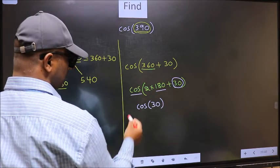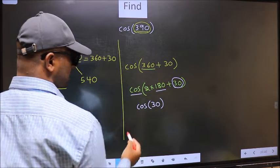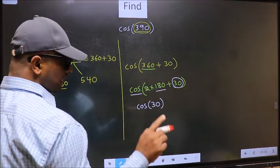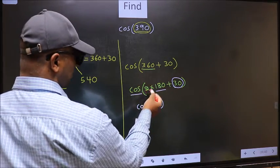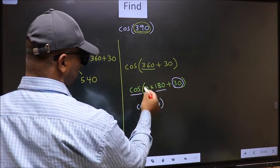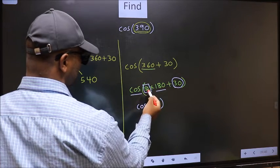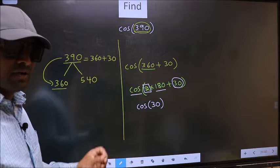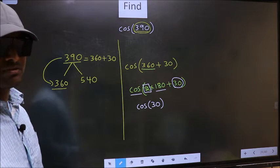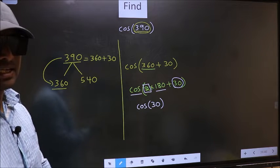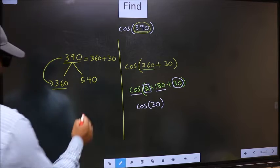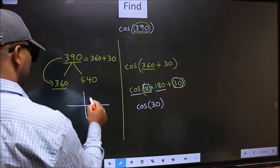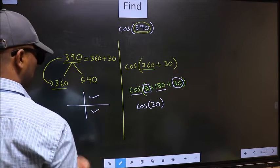Now the question is, will we get plus or minus? To answer that, we should look at the number before 180, which is 2. 2 is even, and all even multiples of 180 lie in either the first or fourth quadrant.